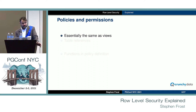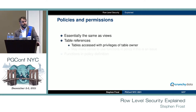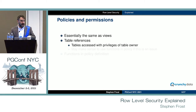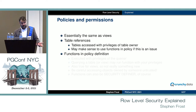When it comes to policies and permissions, the way these things work is essentially the same as views. Table references are handled similarly in that tables are accessed with the privileges of the owner of the table. With row level security, because policies are defined on tables, it's the same — the table access for the underlying table uses the role of the table owner.